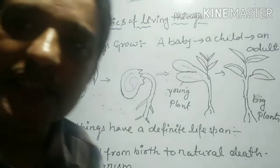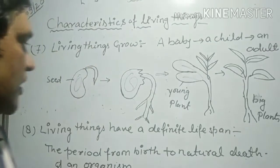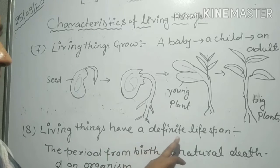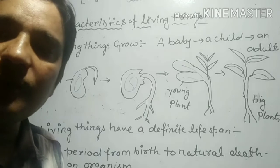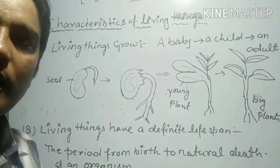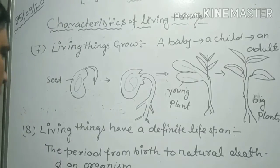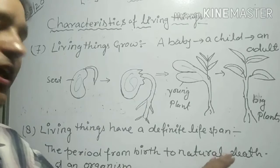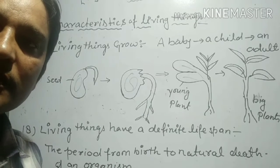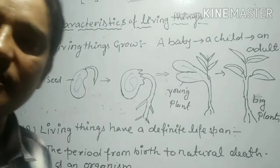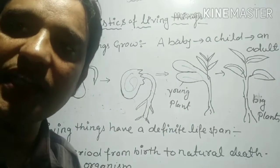Now the next topic: living things have different life spans. First, let's understand what a life span is. The period from the birth to the natural death of an organism is known as the life span.